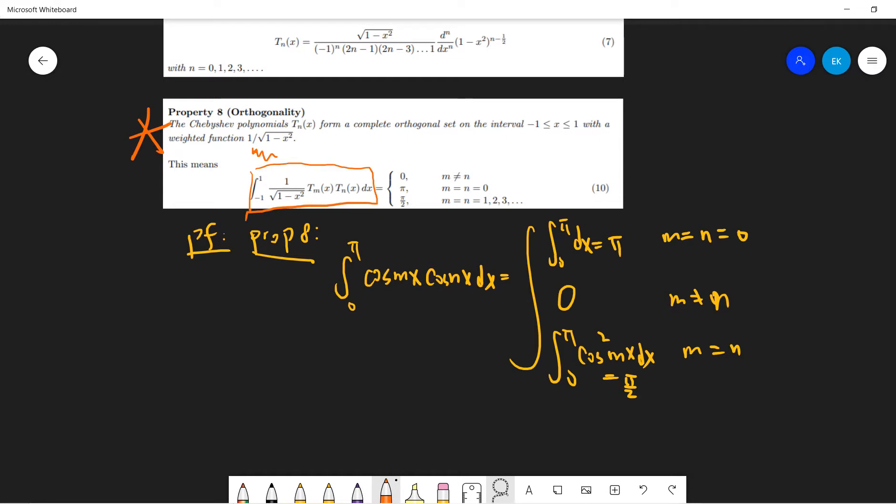So to prove it, it's very simple. We just use the standard Fourier analysis. So cosine mx, if m and n are integer, cosine m cosine n dx, 0 to pi will give you pi if m and n are 0, because if m is 0, then you just integrate 1. So it's basically integral 1 from 0 to pi. So it's pi.